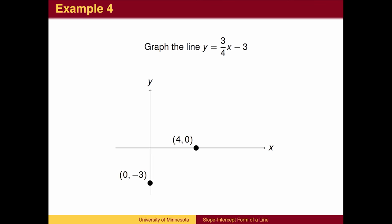We can place new points by counting right 4 up 3, right 4 up 3, and then draw the line.